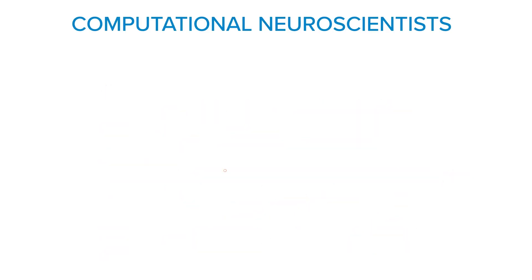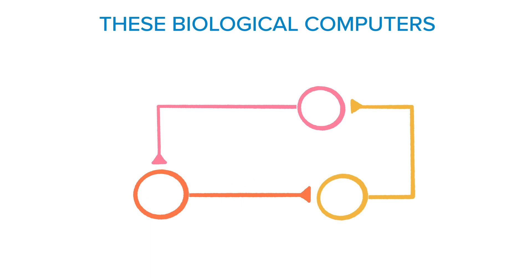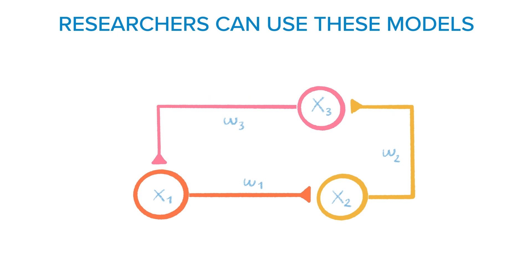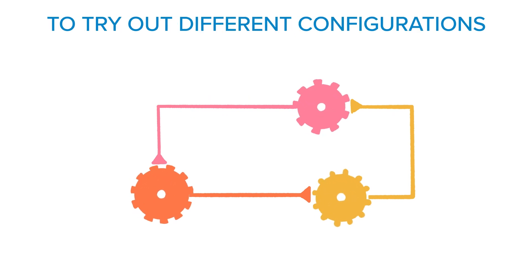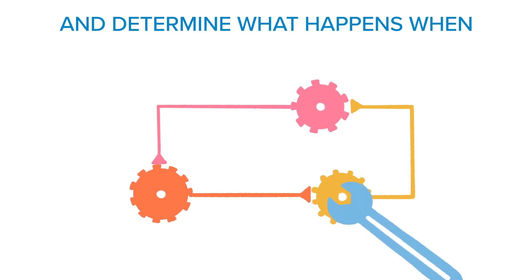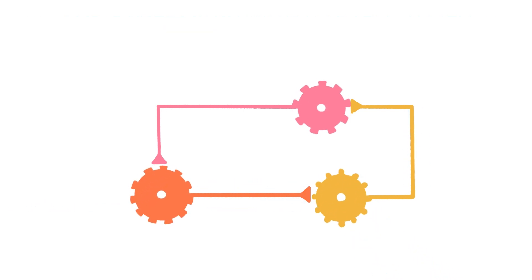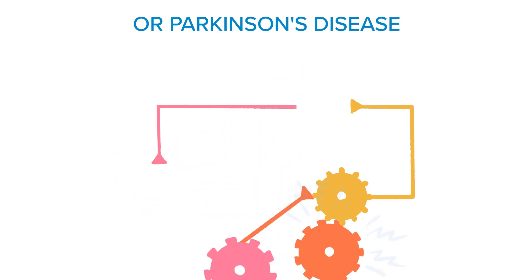Computational neuroscientists are trying to recreate these biological computers with mathematical models. Researchers can then use these models to try out different configurations and determine what happens when our neural networks go out of balance, such as in epilepsy, autism, or Parkinson's disease.